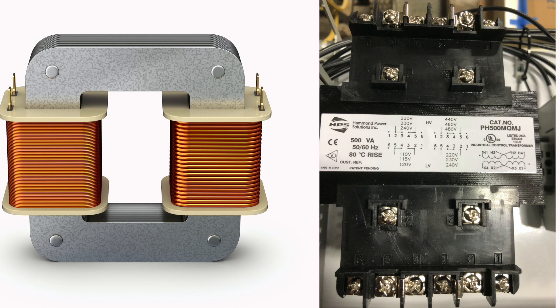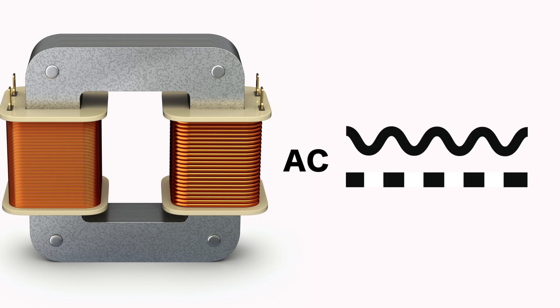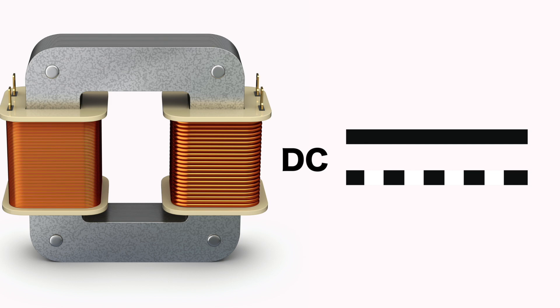Note, a transformer can only be operated using AC voltage. This is because no voltage is induced if there is no change in the magnetic field. Using a constant DC voltage to operate a transformer will cause a large amount of DC current to flow, which can destroy the transformer.